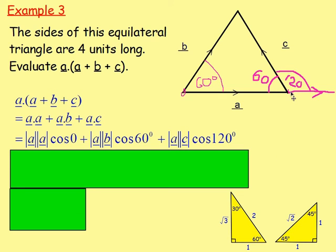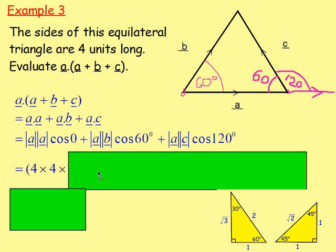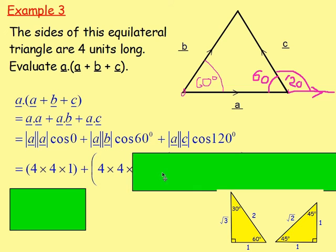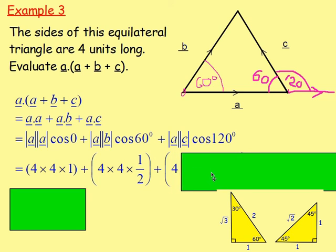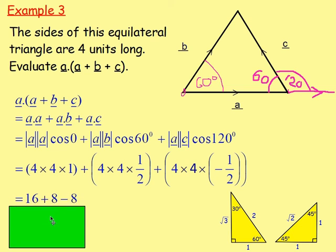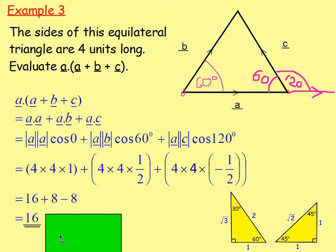Substituting values: 4×4×cos 0 = 4×4×1. For A dot B: 4×4×cos 60 = 4×4×½. For A dot C: 4×4×cos 120. Cosine of 120 degrees is in the second quadrant where cos is negative; it's 60 degrees from 180, and cos 60 = ½, so cos 120 = −½. Simplifying: 16 + 8 − 8 = 16.